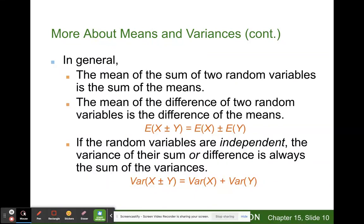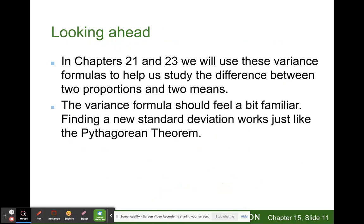In general, the mean of the sum of two random variables is the sum of the means. The mean of the difference of two random variables is the difference of the means. If the random variables are independent, then the variance of their sum or difference is always the sum of the variances. In chapters 21 and 23, we will use these variance formulas to help us study the difference between two proportions and two means.